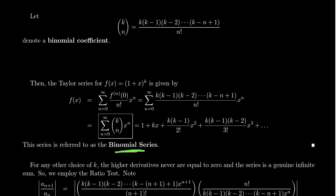So f(x) = (1+x)^k equals its Maclaurin series — the binomial series — which is the sum from n=0 to infinity of (k choose n)·x^n. This number is often called k choose n.